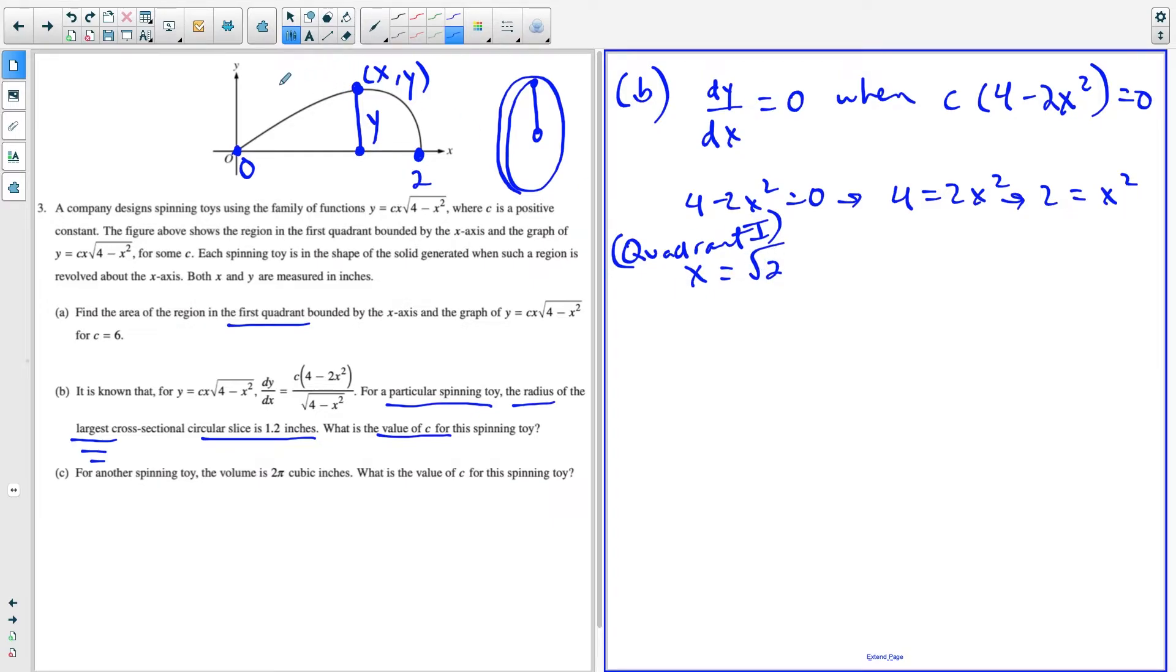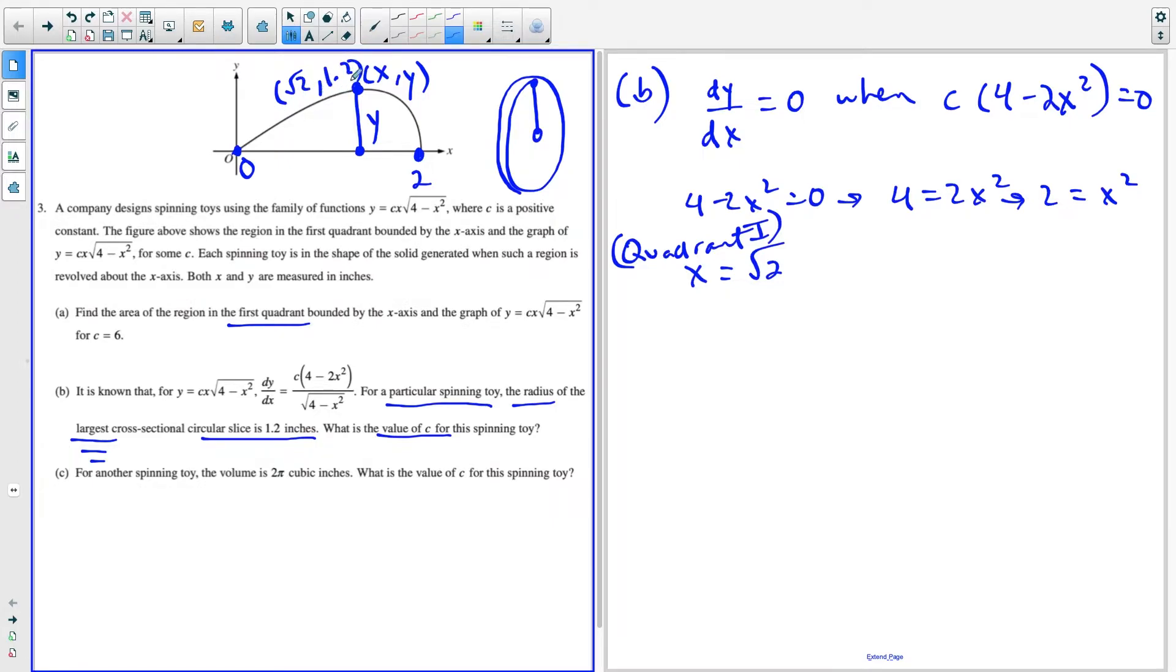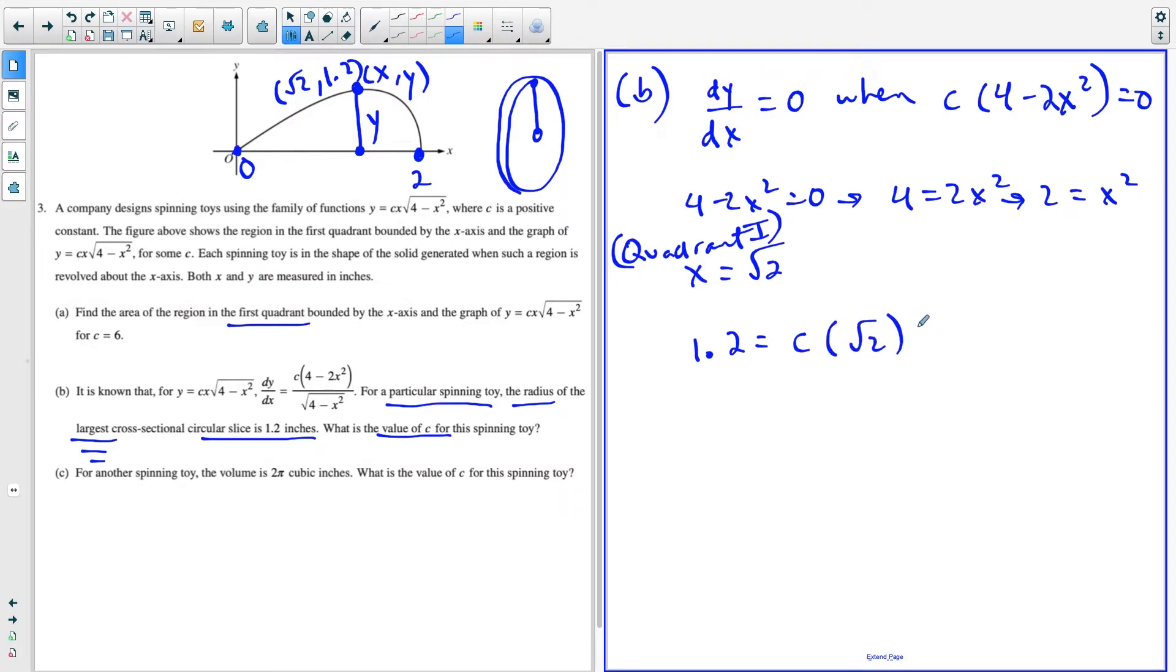So this tells us then that this point is going to be square root of two comma 1.2. So we have the coordinates here. But remember, the goal is to solve for the value of C. So then now all we have to do is plug in x equals square root of two, y equals 1.2 back into the original equation.